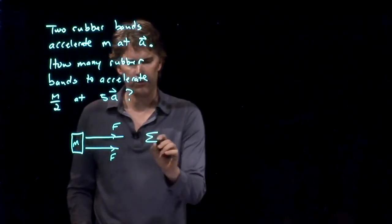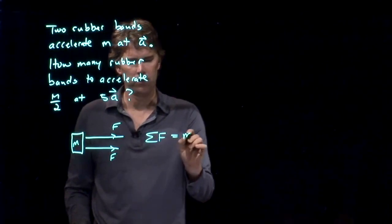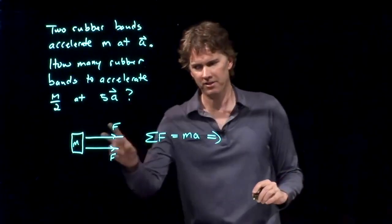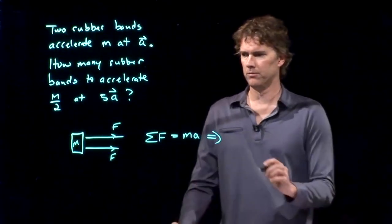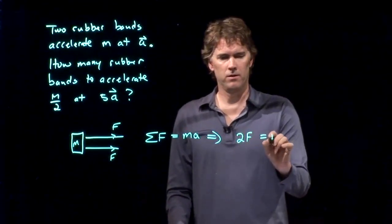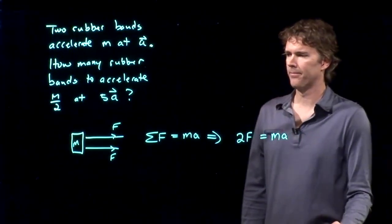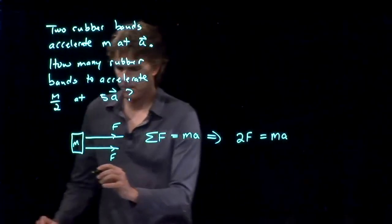sum of the forces is equal to the mass times the acceleration. In this case, I have two forces, right? Two rubber bands tied to it. So I get two F equals MA.